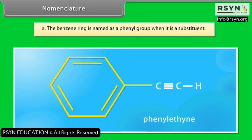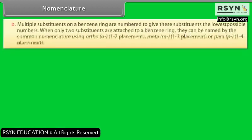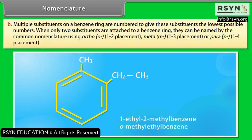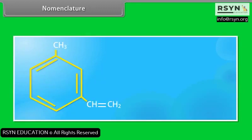The benzene ring is named as a phenyl group when it is a substituent. Multiple substituents on a benzene ring are numbered to give these substituents the lowest possible numbers. When only two substituents are attached to a benzene ring, they can be named by the common nomenclature using ortho (1,2 placement), meta (1,3 placement), or para (1,4 placement). For example, a given compound is 1-ethyl-2-methylbenzene, or ortho-methylethylbenzene. Can you name the given compound?